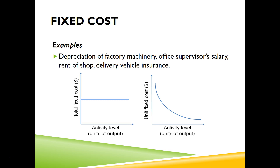If you look at the two graphs in the slide: the first graph shows total fixed cost — regardless of activity level, fixed cost remains unchanged. The second graph is the unit fixed cost graph — the more units you produce, the fixed cost per unit reduces. For example, if I pay ten thousand dollars for rent and produce only one product, I'm paying ten thousand dollars of rent for that one product. But if I produce ten thousand products for a ten thousand dollar rent, it's one dollar of rent per product.